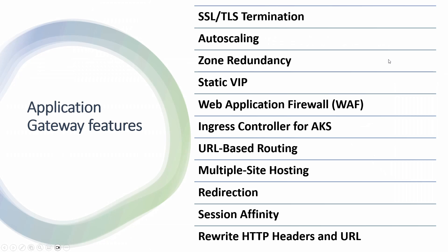The third feature is zone redundancy. Application Gateway is a regional service, so for high availability and fault tolerance you need to deploy it in multiple regions. However, with support for Azure Availability Zones, high availability and fault tolerance can now be provided by distributing Application Gateway instances across different zones. Application Gateway also provides a static virtual IP, meaning the public IP created for it remains unchanged throughout its lifecycle — very useful for DNS registration of custom domains.